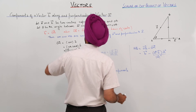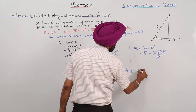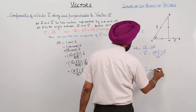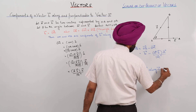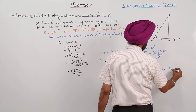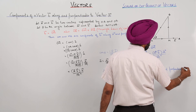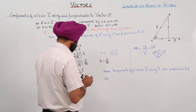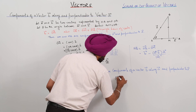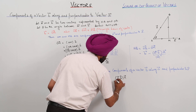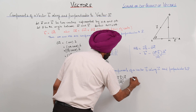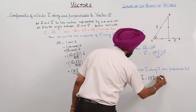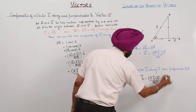Hence, the components of vector B along vector A and perpendicular to vector A are: the component along vector A is vector A dot vector B times vector A upon magnitude of A squared, and the component perpendicular to vector A is vector B minus that expression. So these are the components.